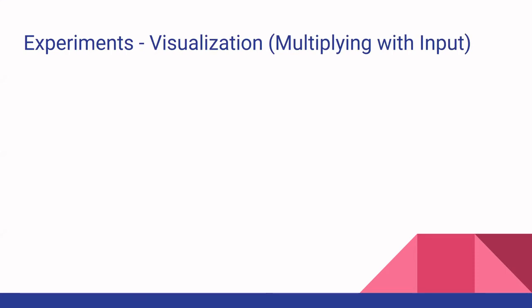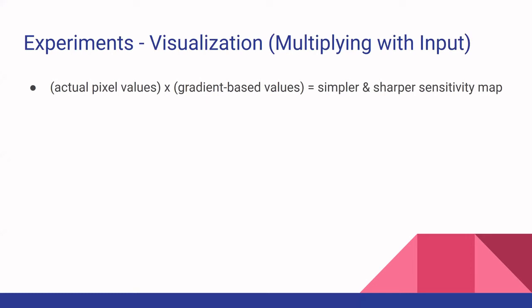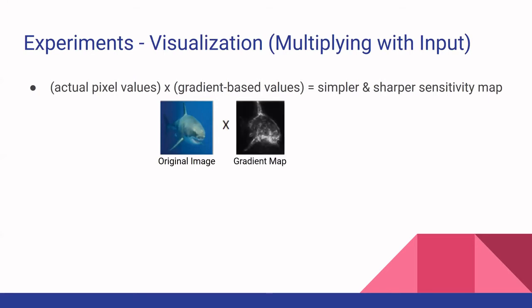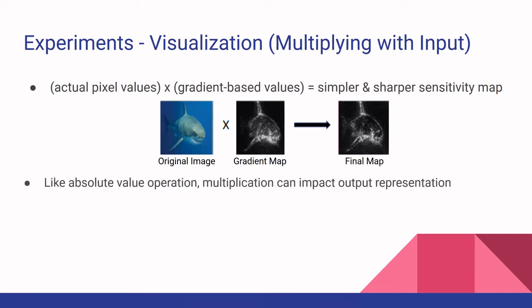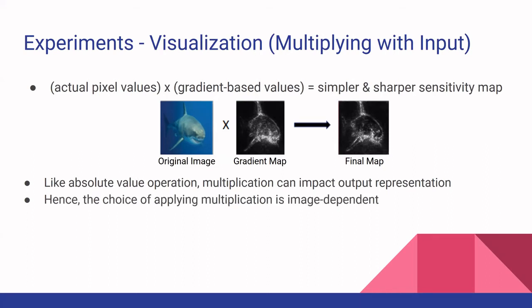A third visualization technique was multiplying the gradients with the input image. They would take the actual pixel values — for example of a shark image — and multiply them by the gradient base values of the gradient map. This often produced a final map that was much simpler and sharper. They did this to weight the gradient values with actual pixel values, to see each pixel's contribution to the overall map. Like absolute value, this technique's usefulness is very much image dependent.